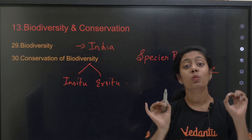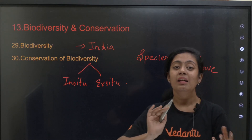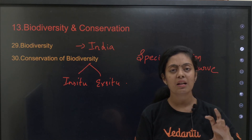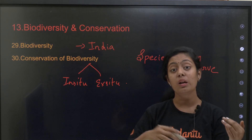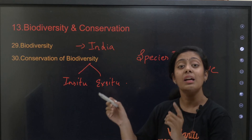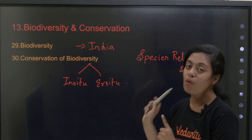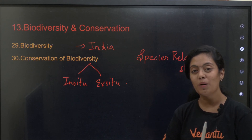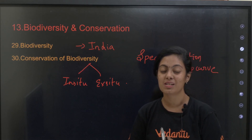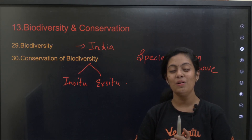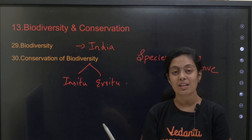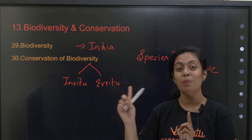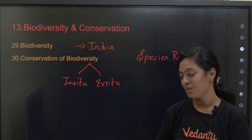If you are scoring around 50 to 60, you can definitely boost your performance and reach 90 to 95 if you are very thorough with all these topics. Do stay tuned for more bio learning, like, share, and subscribe, and don't forget to leave a comment. This video is very useful for all those aiming for CBSE 2024 Biology centum. Thank you so much!